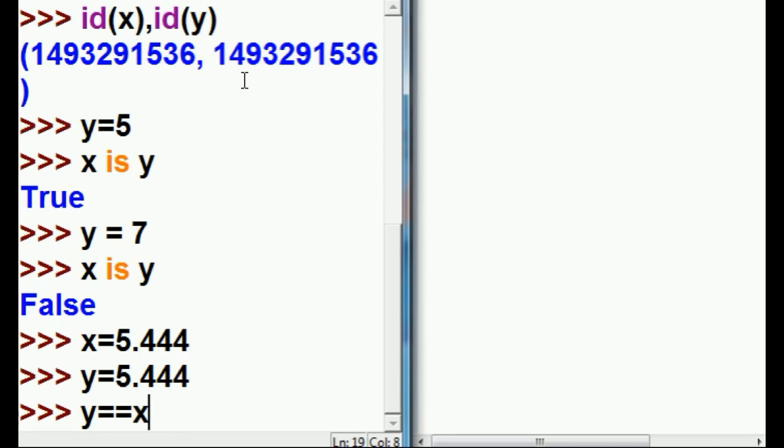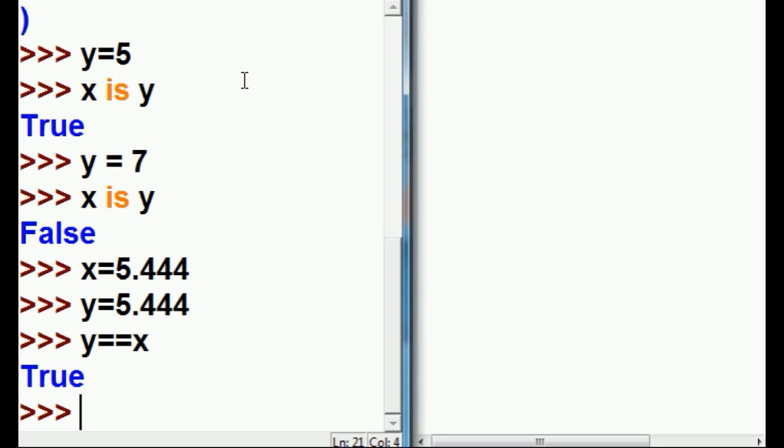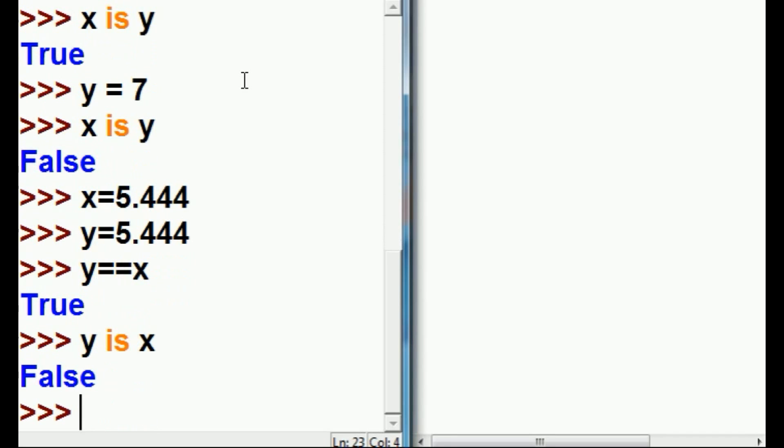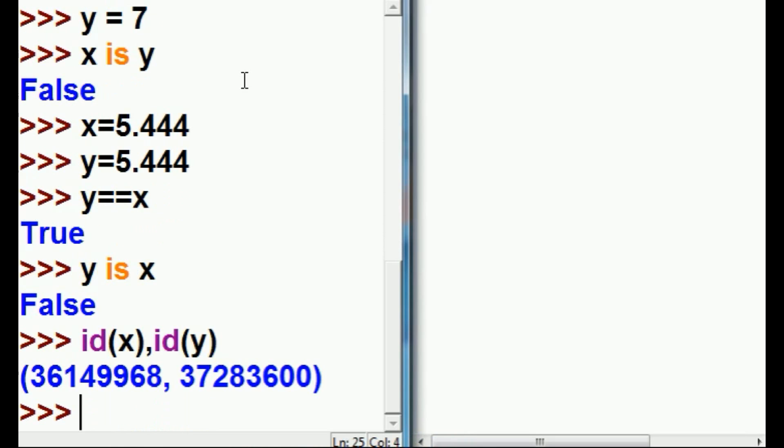y equals x. Yes. y is x. Uh-oh. How can that be? They're pointing to separate areas in memory. Yes. id of x, id of y. And we get two separate numbers.